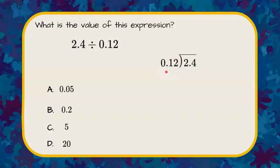Our divisor has to be a whole number. So we're going to move our decimal point two spaces to the right, which makes it 12, our whole number.